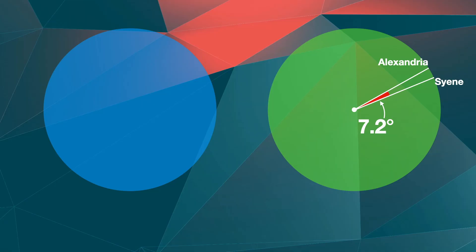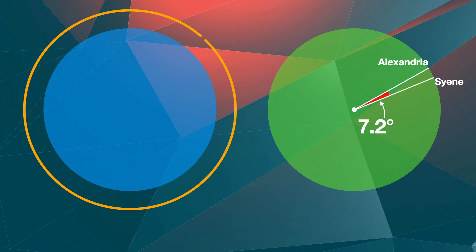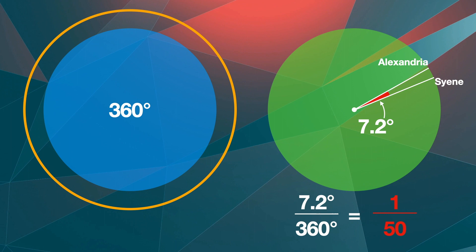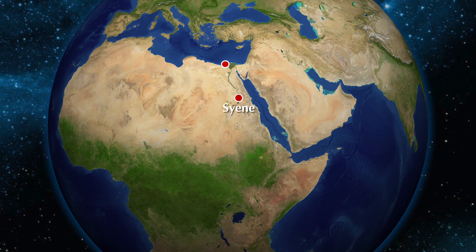Given that a circle is 360 degrees, Eratosthenes understood that by dividing 7.2 by 360, the distance between Alexandria and Syene was 1/50th of earth's circumference. To find out the entire earth's circumference, he needed to know the distance between the two cities.